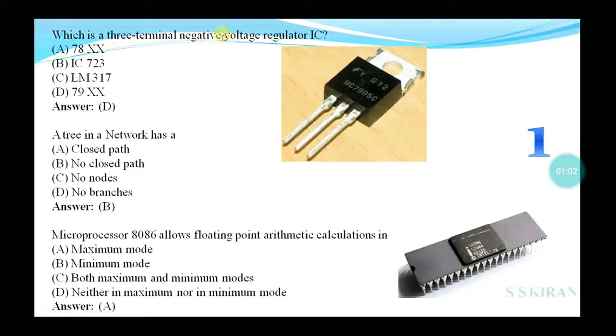There are two types of voltage regulators: negative and positive. Seven-eight series comes under positive voltage regulator, like 7805. Option B: IC 7223, LM317, 79-series. Negative voltage regulator, the option is D, that is 79XX where XX means 05, 12, 24, etc.